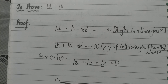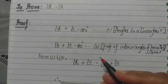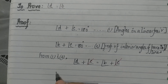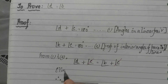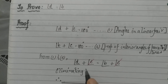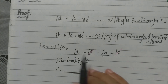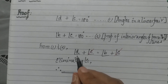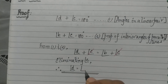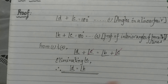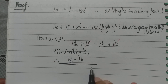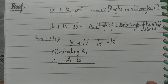Angle C is the same on either side, so we can cancel it. Eliminating angle C, we are left with angle D is equal to angle B. That is exactly what we had to prove, so we have proved that angle D is equal to angle B.